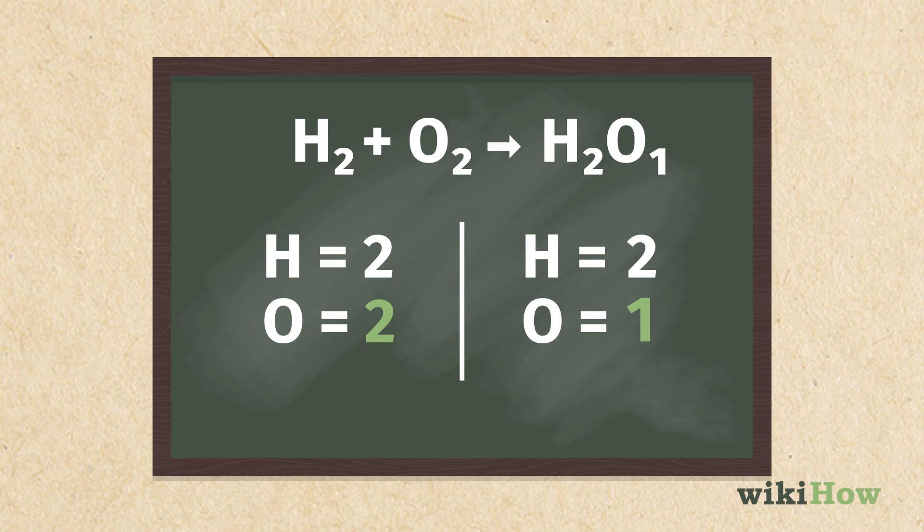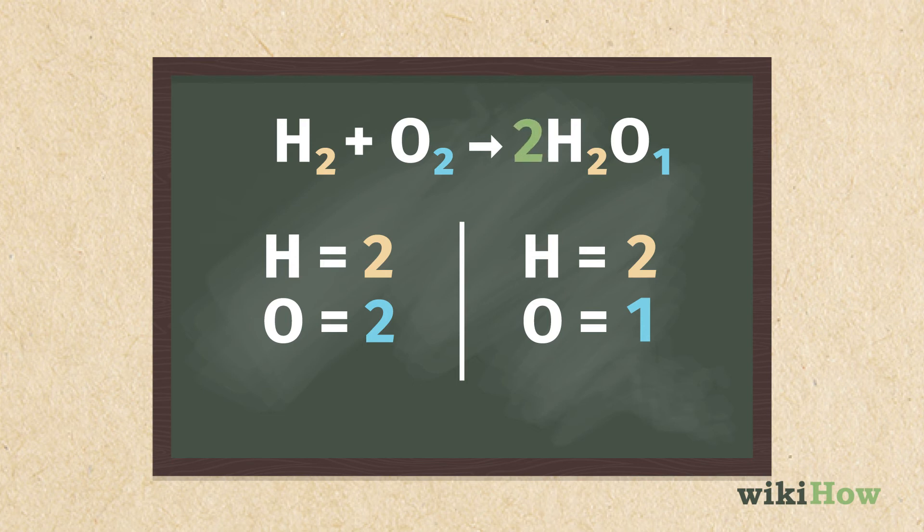To balance the equation, you'll need to add coefficients to change the number of atoms on one side to match the other. For the equation H2 plus O2 equals H2O, you would add the coefficient 2 before H2O on the right side so that there are two oxygen atoms on each side of the equation, like H2 plus O2 equals 2H2O.